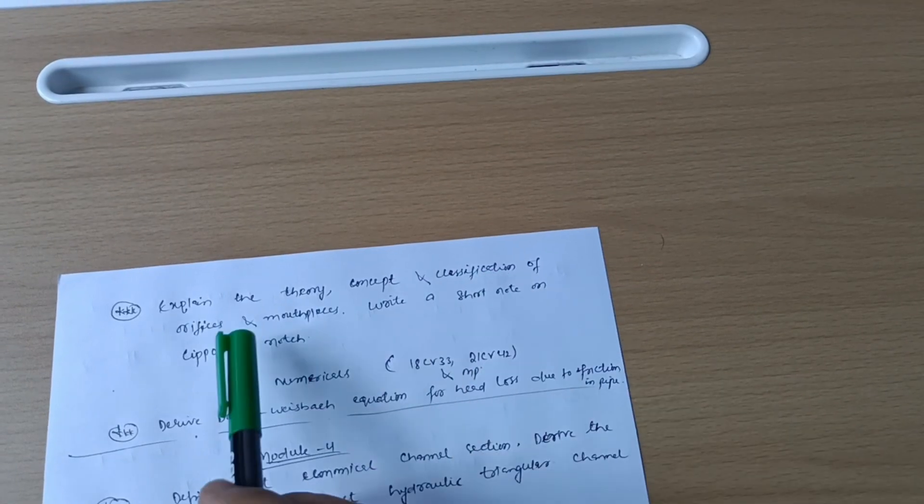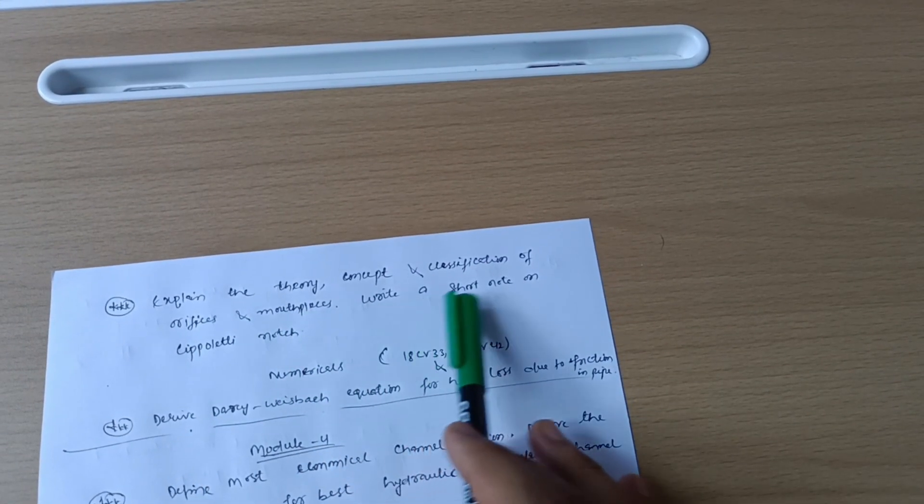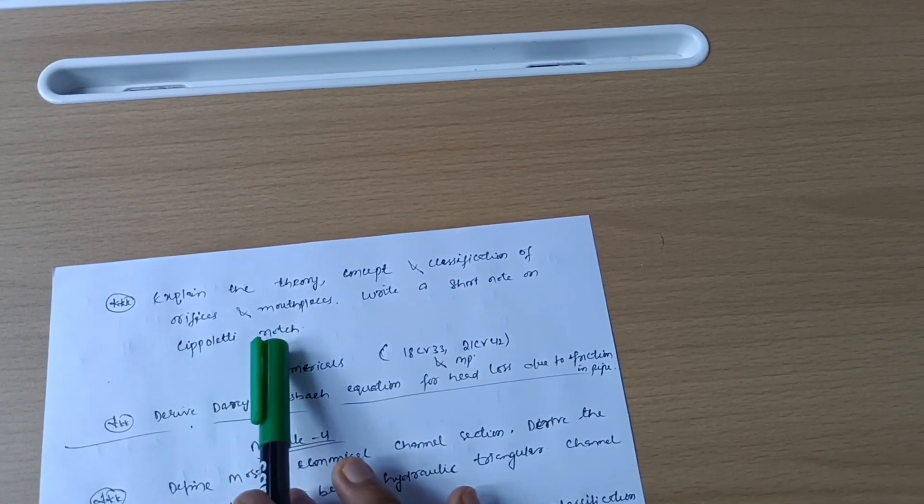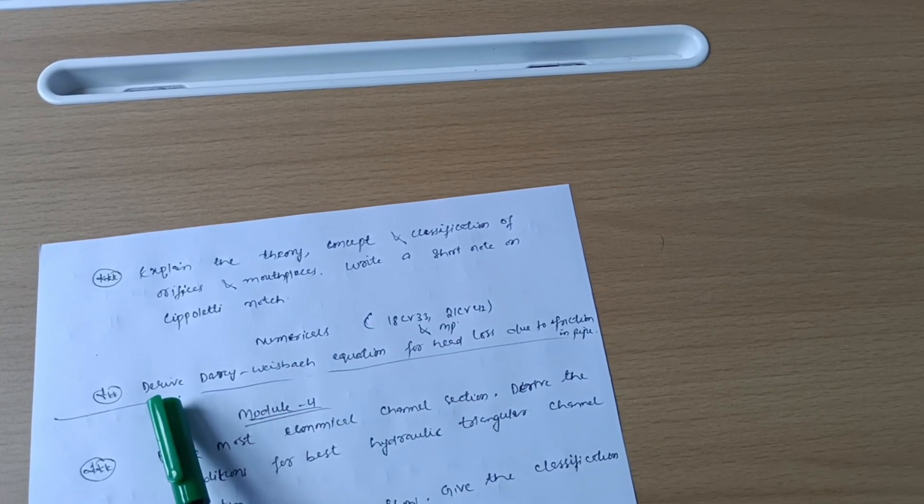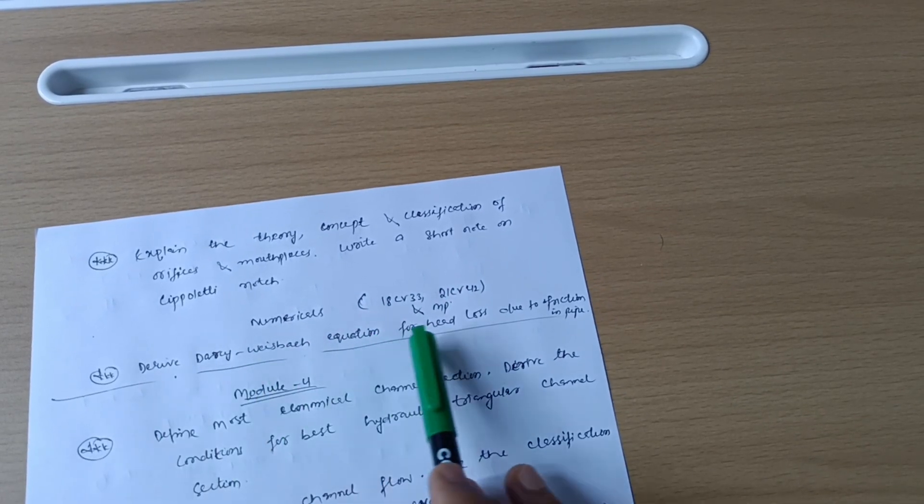Next we have explain the theory, concept and classification of orifice and mouthpieces. Write a short note on Cipolletti notch. Next is numericals as usual what I have mentioned so far, and derive Darcy-Weisbach equation for head loss due to friction in pipe.